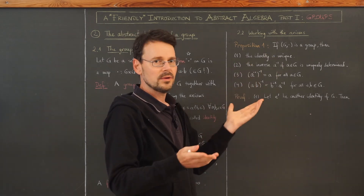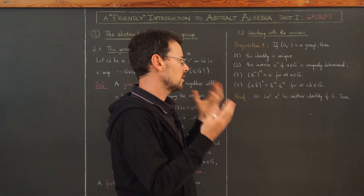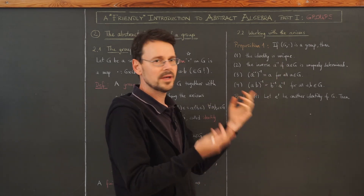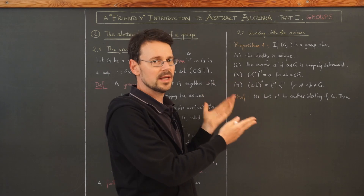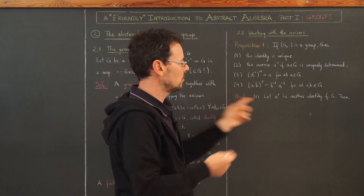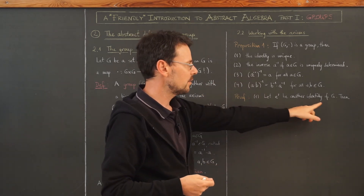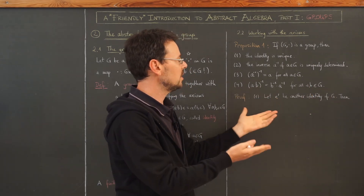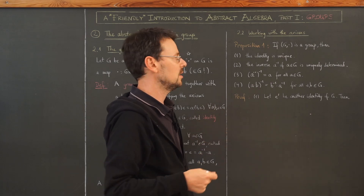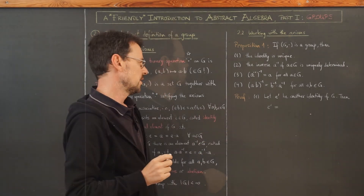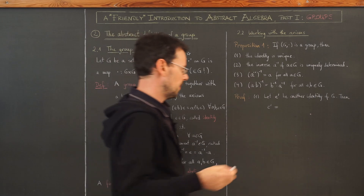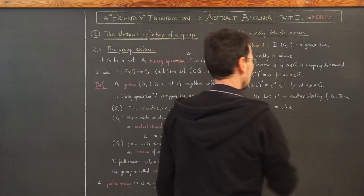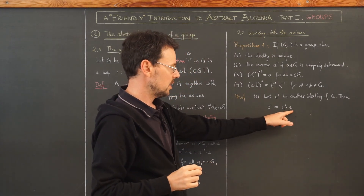A good method of showing uniqueness is to assume you have another element satisfying the same. So let e' be another identity of G — we have to show that e' must equal e, the identity element of G. We start with e': e' is the same as e'·e.